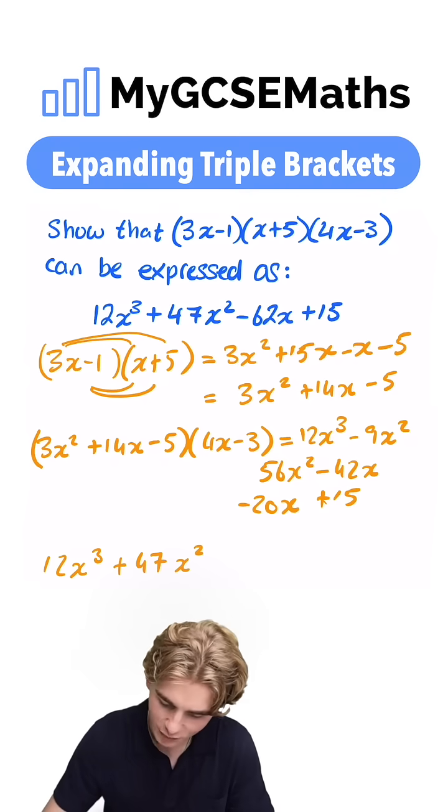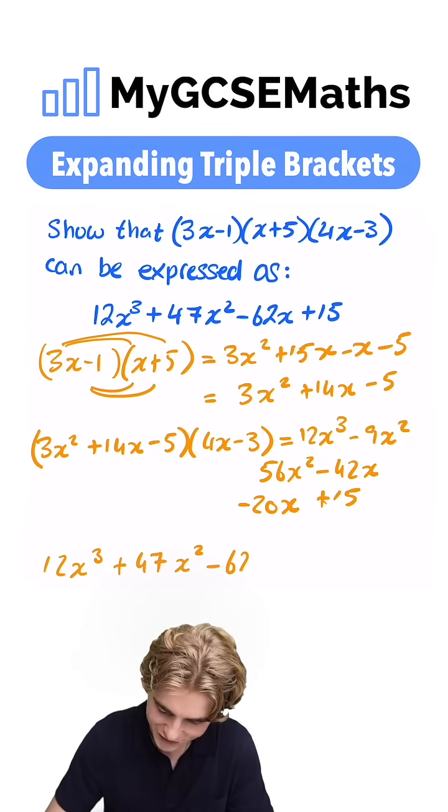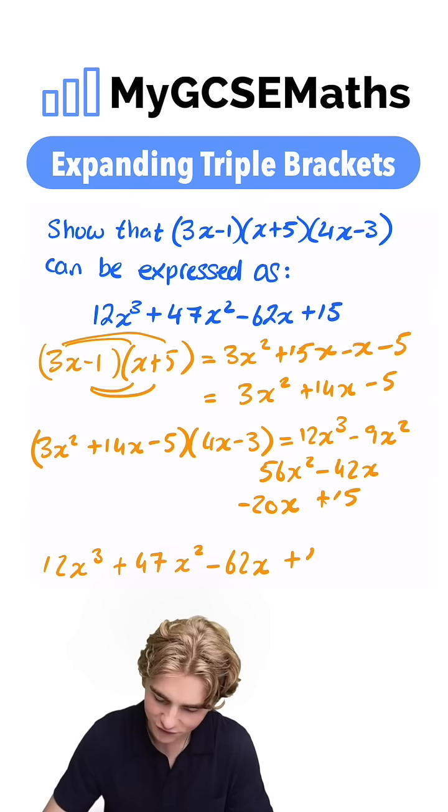Next up, our x's. We have minus 42x minus 20x. Combining those, we're gonna get minus 62x. Finally, our plus 15 on the end.